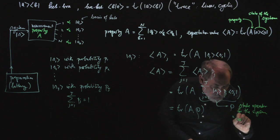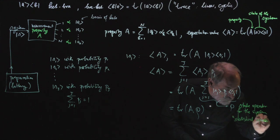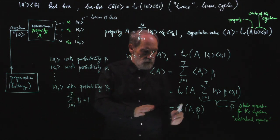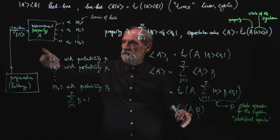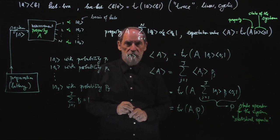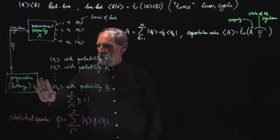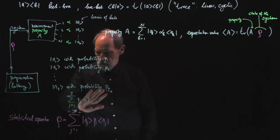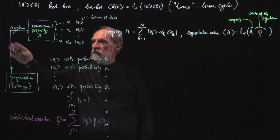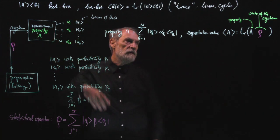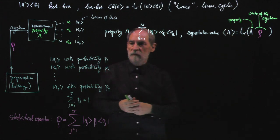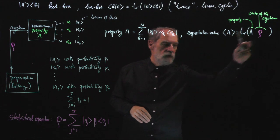In this more general setting, the expectation value of A is the trace of a product of two operators: one operator referring to the property being measured, and one operator referring to how the system is prepared. Whatever is going on in the preparation — whether there is a lottery or not — what comes out is described by the statistical operator. This system is fed into the measuring apparatus, and the expectation value of property A is calculated using this trace rule with these two factors.